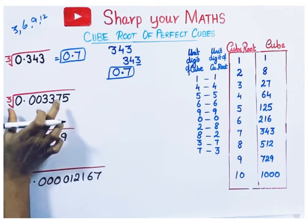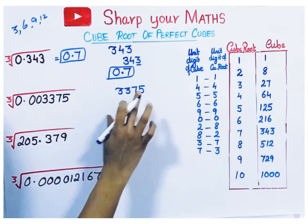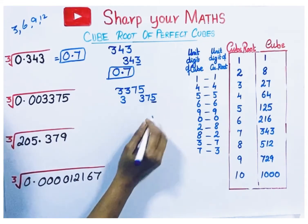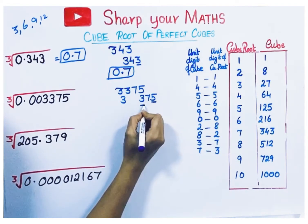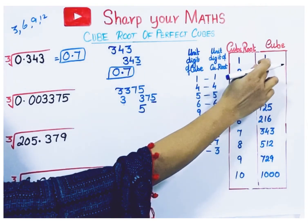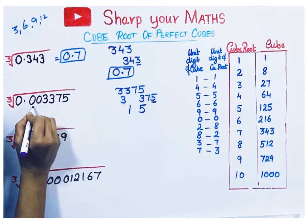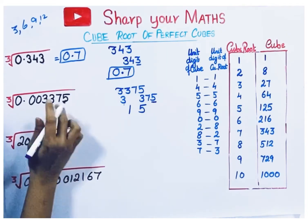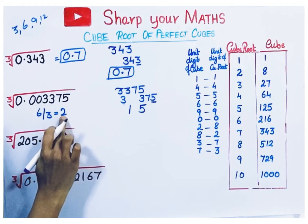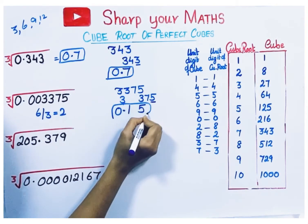Next number: take the number without the point as 3375. Divide into groups — last 3 digits one group, remaining digits another group. Check the unit digit: if the cube ends with 5, its cube root ends with 5. The left group is 1, and the cube closest to 1 is 1, so its cube root is 1. The cube has 6 decimal places. Divide 6 by 3 to get 2, meaning the cube root should have 2 decimal places. So we get the cube root with 2 decimal places, which is 1.15.